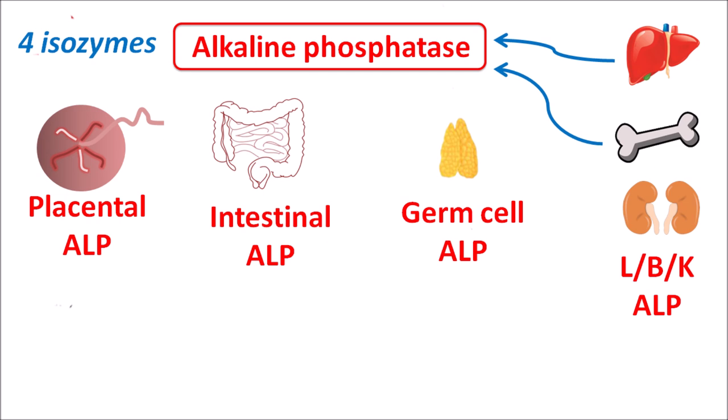Any disorders associated with bone and liver may elevate the alkaline phosphatase levels, which is used as an important tool to assess clinical disorders related to these two organs.